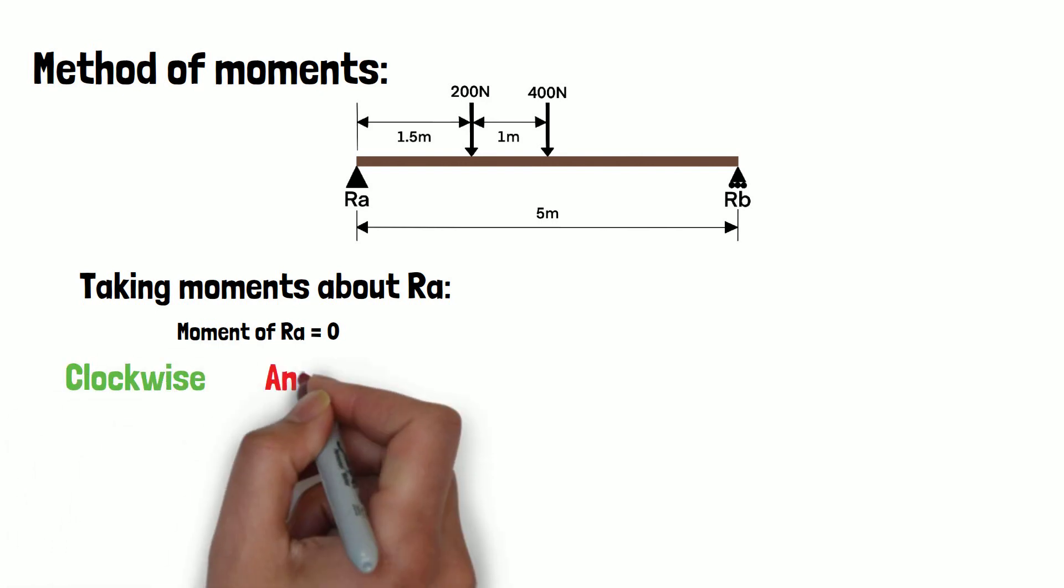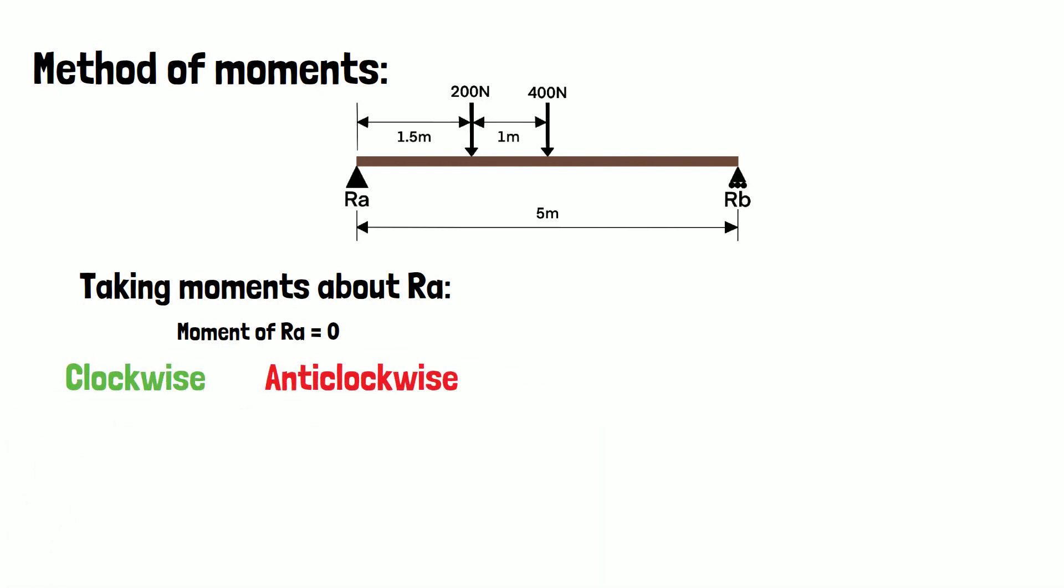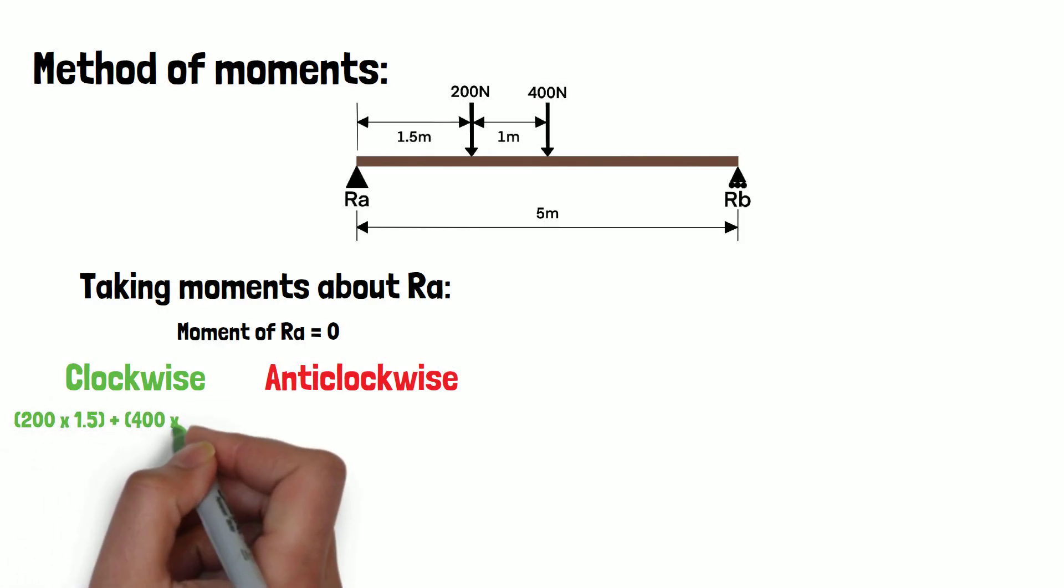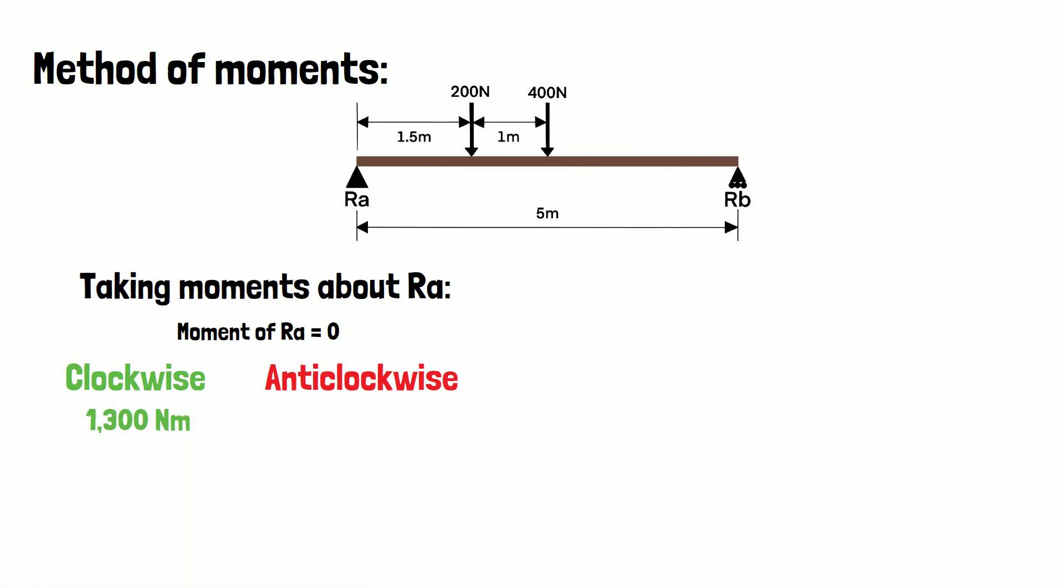Next we will calculate the clockwise and anticlockwise moments. Starting with the clockwise moments, we have a 200N load at a distance of 1.5 meters and a 400N load at a distance of 2.5 meters. So total clockwise moments equal 200 times 1.5 plus 400 times 2.5, which equals 1300 Nm.